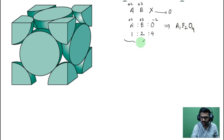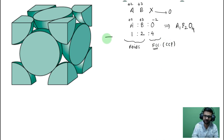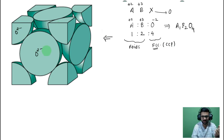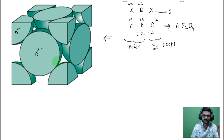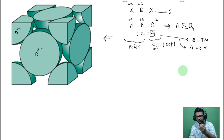Within this structure, A and B are present in the voids because they are metals. The unit cell is face-centered cubic (FCC), with atoms at each corner and each face. In an FCC unit cell, there are 4 atoms, 8 tetrahedral voids, and 4 octahedral voids.